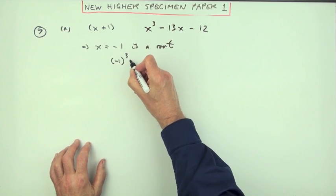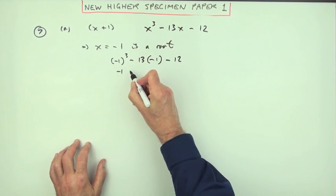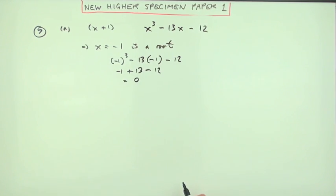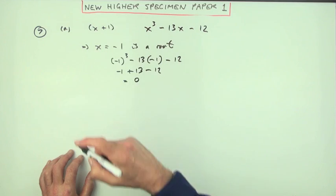So you try that. So negative one cubed minus thirteen times negative one minus twelve, that'll be negative one plus thirteen minus twelve, which equals zero. And then the statement would then be, well, it was a root, so it was a factor.